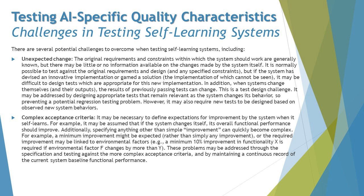When making changes to an existing live application, there may be both-sided effects — it can be positive, improving the system, or negative, decreasing performance parameters. We should understand what factors are being improved and whether that improvement has any side effects or adverse effects on the existing system. These problems may be addressed through specification and testing against more complex acceptance criteria, and by maintaining a continuous record of the current system baseline functional performance.